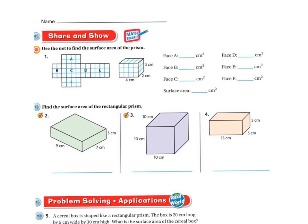You're going to do the rest of these problems the same way. On this one they already drew it out for you, so you can count the grid squares — for example, surface A counts to 8, or it's 2 by 4, and 2 times 4 is 8. Find the surface area of each face and add them all up. Good luck!